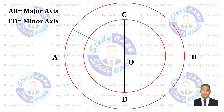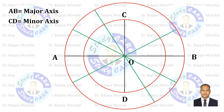Now divide the circle into 12 parts. Each part will be 30 degrees. Give the names accordingly: 1, 2, 3, 4, 5, 6, 7, 8. Give names inside also.